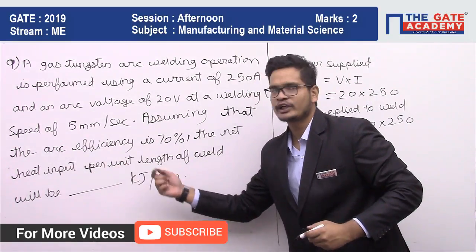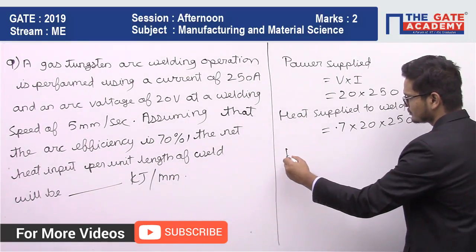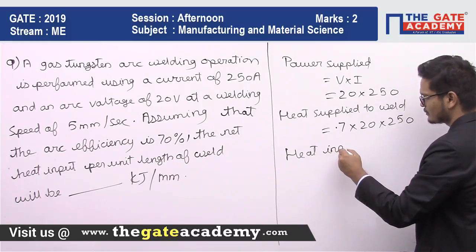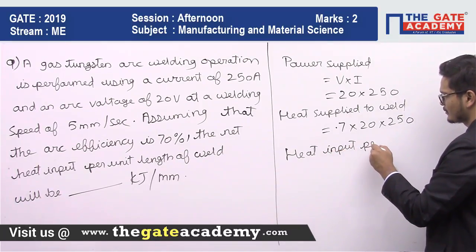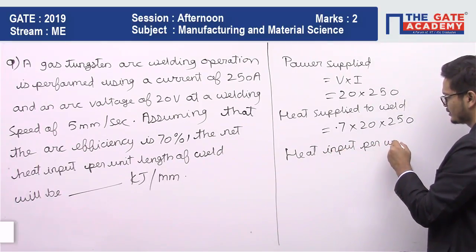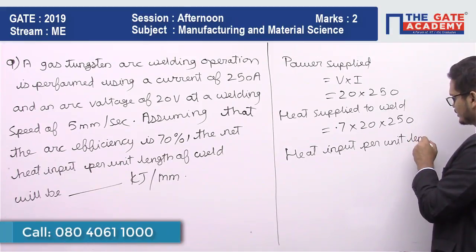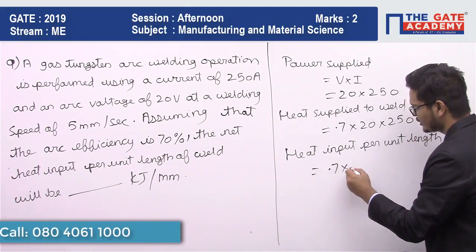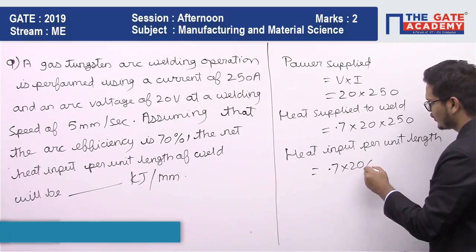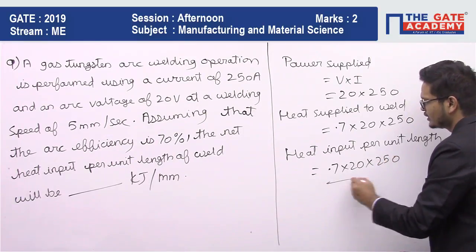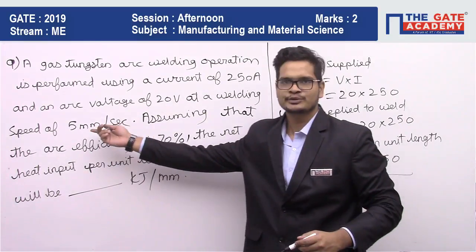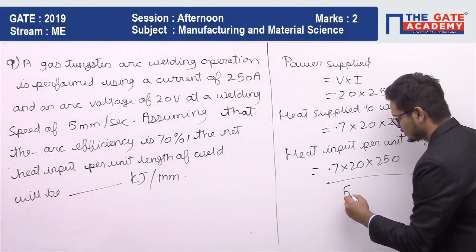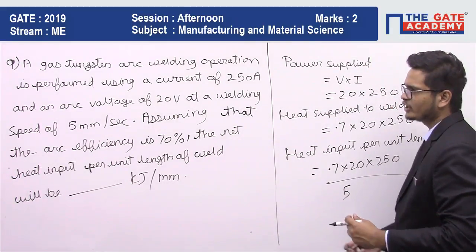They are asking us to find heat input per unit length. Per unit length it is 0.7 into 30 into 250 divided by the speed, which is 5 mm per second.